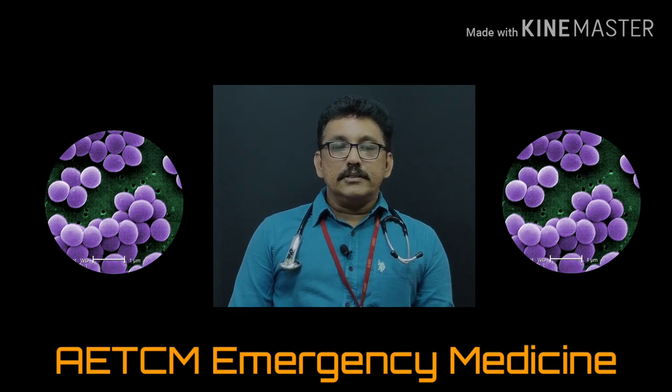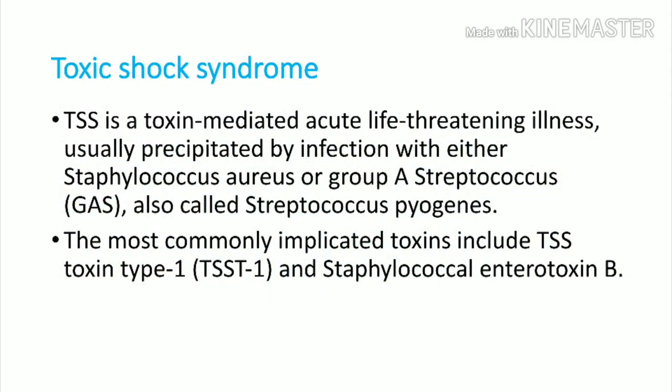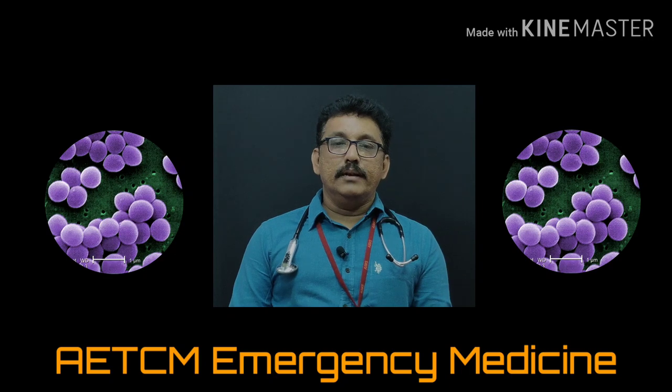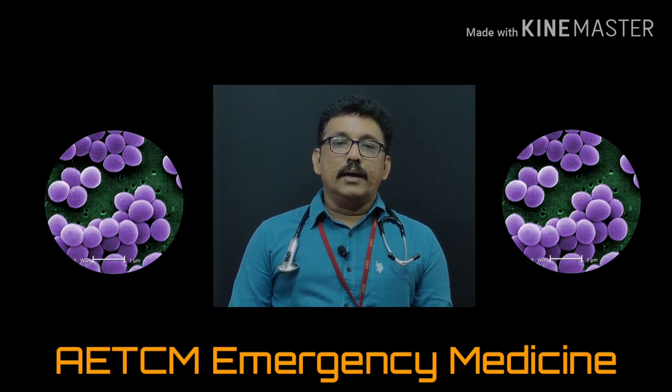Toxic shock syndrome is produced by either staphylococcus or streptococcus — these are the two organisms. Most patients with streptococcus or staphylococcus infection have localized disease: the organism grows and produces problems locally. But rarely, the organism produces toxins causing acute life-threatening illness or shock. Toxic shock syndrome is mainly produced by a toxin called TSS type 1 or staphylococcal enterotoxin B — these are the two main toxins producing toxic shock syndrome.